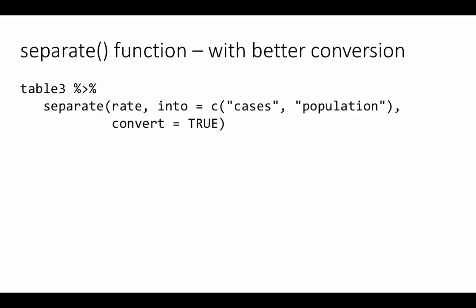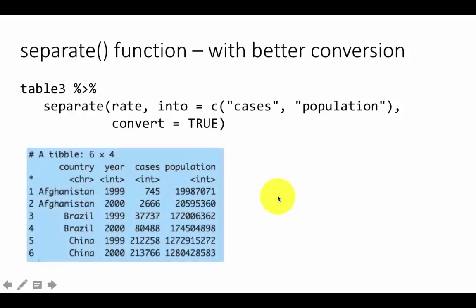There's a way for it to make it convert as well. All you have to do is include the convert equals true flag when you're calling the separate function, and then it will do the job. So here, if you did this, then you see that the resulting two columns, cases and population, are integers. This is just another convenience that you have.